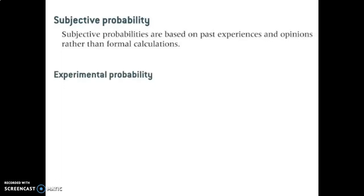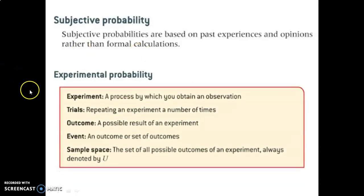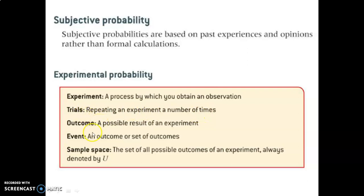To better express probability, it is a good idea to run an experiment because it gives us data by which we can make a better determination of probability. An experiment is the process by which you obtain observations or data. Trials is the repetition of experiments a certain number of times — the number of times you run the experiment. An outcome is a possible result of an experiment.